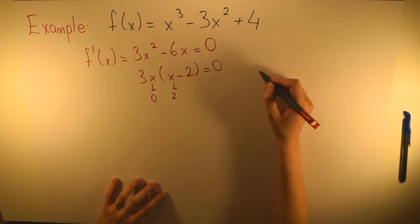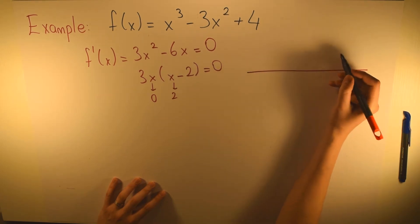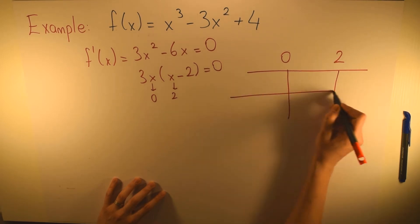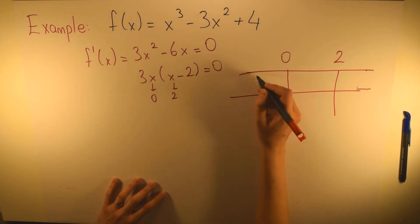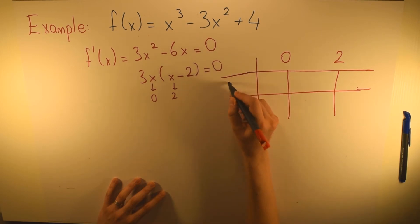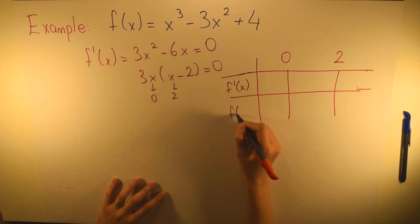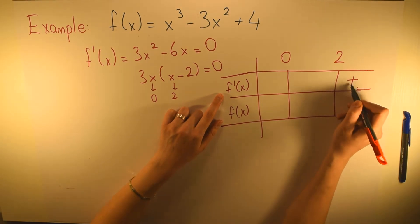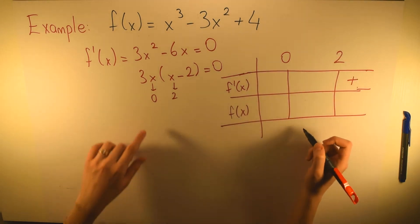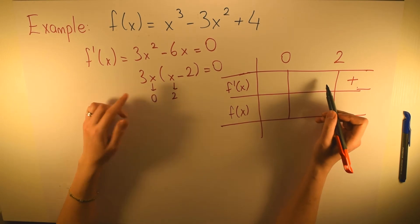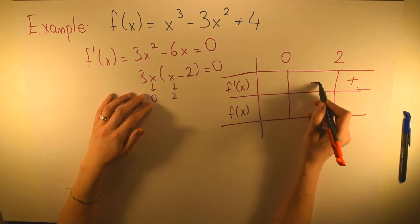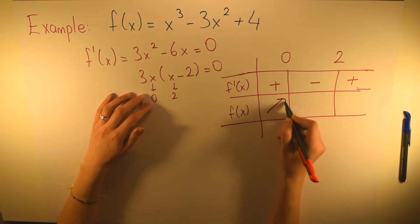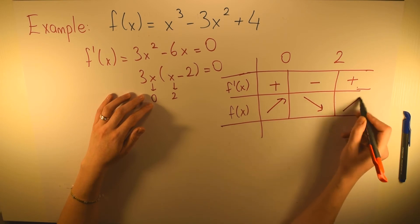After that we draw our sign chart with critical points 0 and 2. We have the derivative of f(x) and our function f(x). The derivative starts with plus because when x is greater than 2 the derivative is also greater than zero. So the sign pattern is: plus, negative, and plus. This means the function is increasing in the first interval, decreasing in the second, and increasing again in the third.